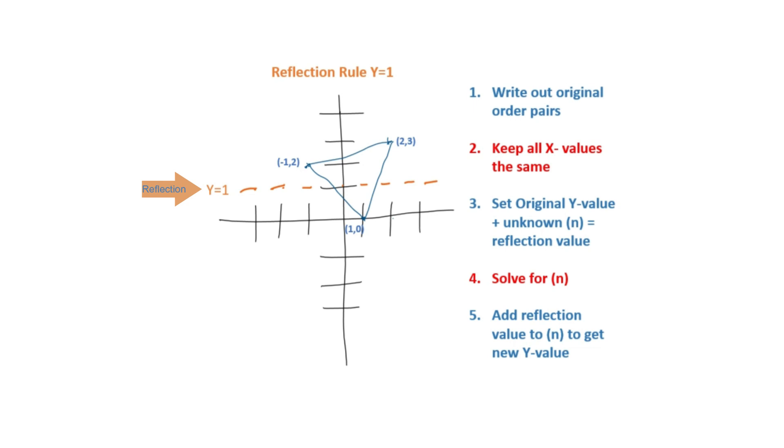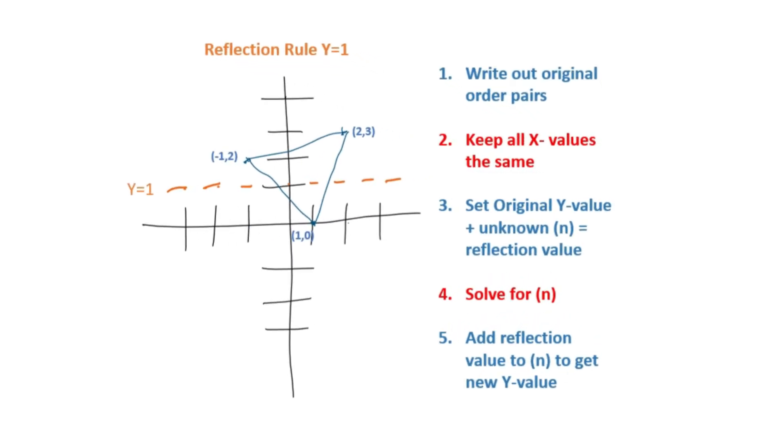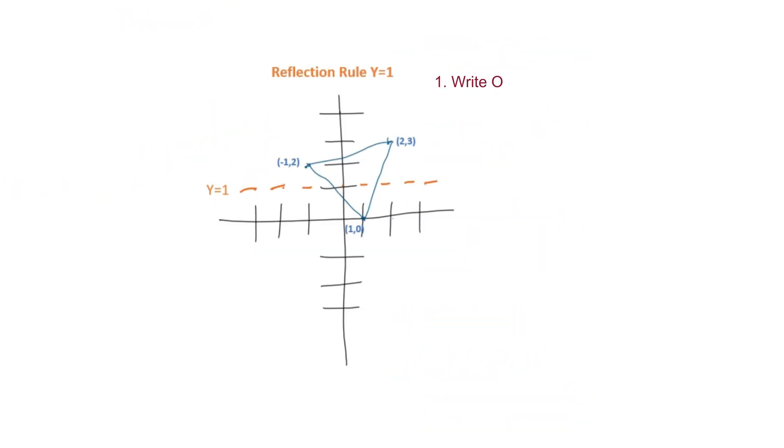We're going to use five steps to determine the reflection of this triangle over y equals 1. Our first step is to write our original values: (-1, 2), (2, 3), and (1, 0).